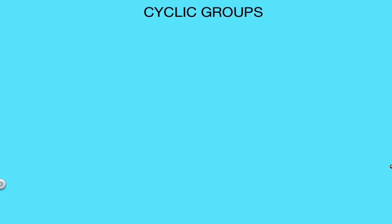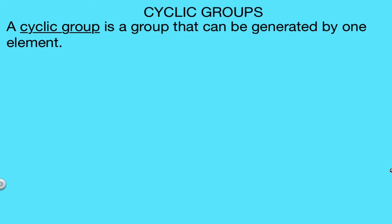In this video we're going to talk about cyclic groups. A cyclic group is a group that can be generated by one element. A cyclic group is first and foremost a group, so you need to understand what it means to be a group. A group is a set with a binary operation that has an identity element, where each element has an inverse and the binary operation is associative.